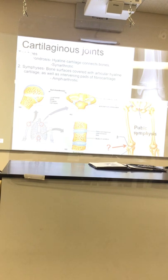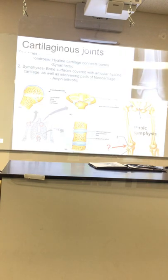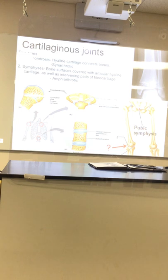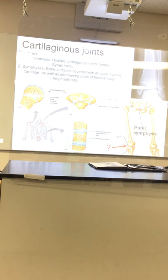Moving on — cartilaginous joints. There are two types: synchondroses and symphyses. People mix these up on tests every year. Synchondrosis is hyaline-cartilage-based exclusively. A symphysis has fibrocartilage. Synchondrosis — hyaline cartilage exclusive. Symphysis — fibrocartilage. That is the key difference.